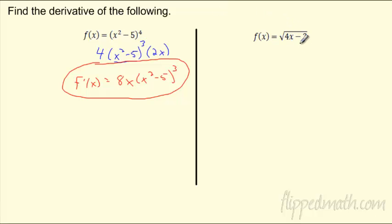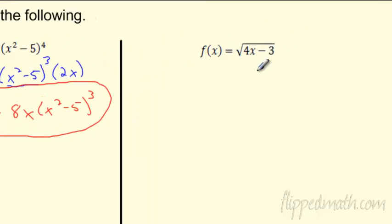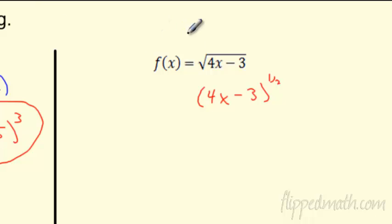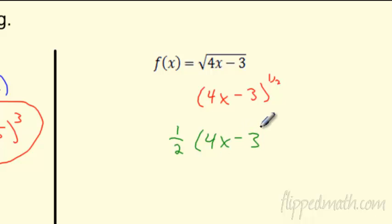How about this one — is this a chain rule? Sure. Think of the square root by rewriting it as (4x-3)^(1/2). Now take the derivative: the 1/2 comes in front, you freeze whatever is inside the grouping symbol so it stays the same, then you drop the power, so 1/2 minus 1 is negative 1/2.